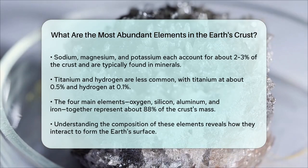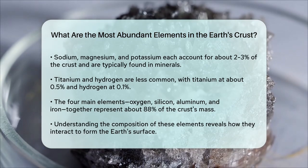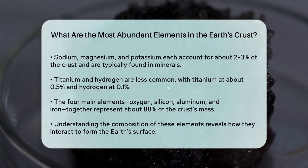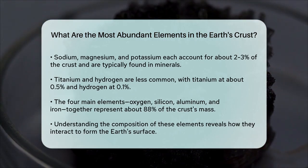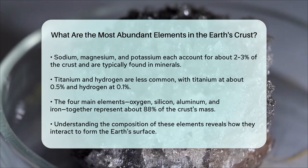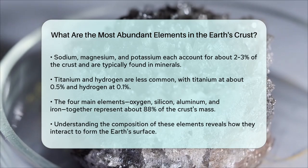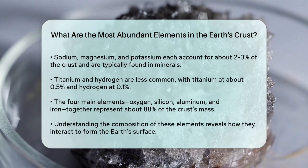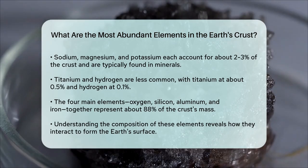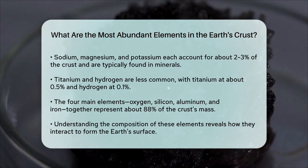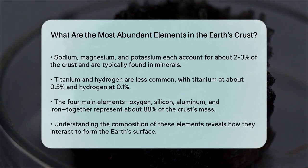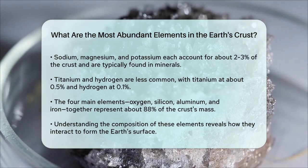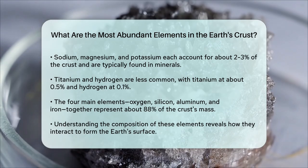These elements — especially oxygen, silicon, aluminum, and iron — account for about 88% of the mass of the Earth's crust. The remaining elements, although less abundant, still play vital roles in the formation of rocks and minerals.